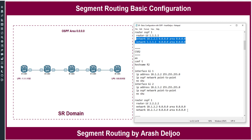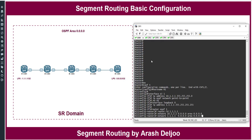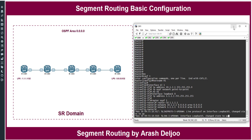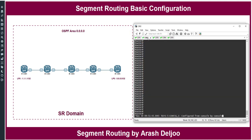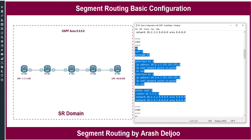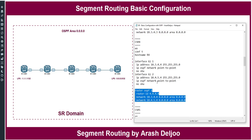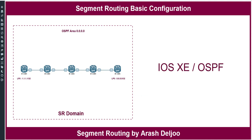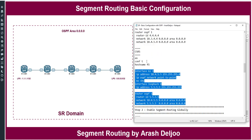Similar configurations exist on all other routers. I will now copy and paste this configuration into each router's CLI. First CSR1, then CSR2, then Router 3, then Router 4, and finally Router 5.